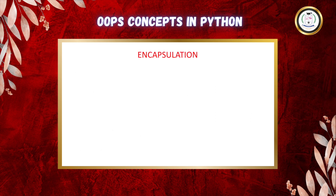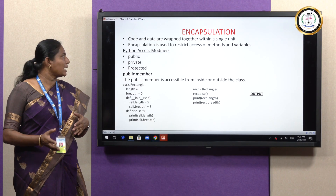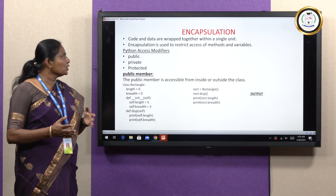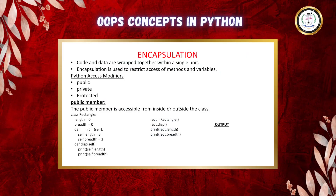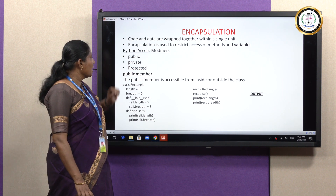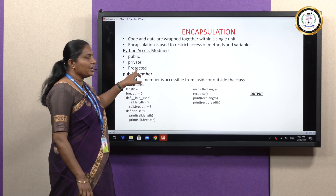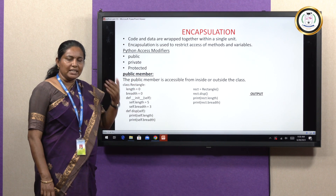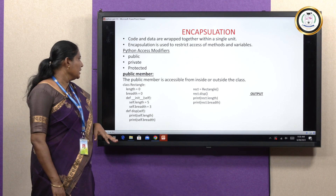The next concept is encapsulation. Code and data are wrapped together to form a single unit — this is called encapsulation. Encapsulation is used to restrict access to class methods and variables. There are three access modifiers in Python: public, private, and protected. We can access public members anywhere in the program. Private variables are only accessible inside the class. Protected variables can be accessed within the class and its subclasses only; we cannot access protected members from outside the class.